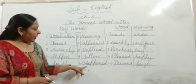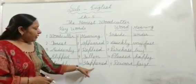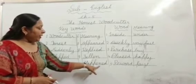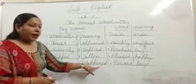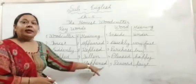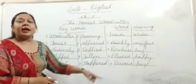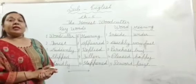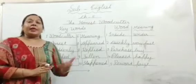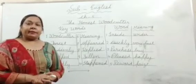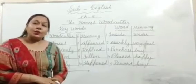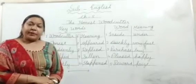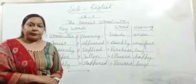Number ten: H-A-P-P-E-N-E-D — Happened. Happened means take place — kisi cheez ka hona. Happened means hona, kisi bhi cheez ka aa jana.